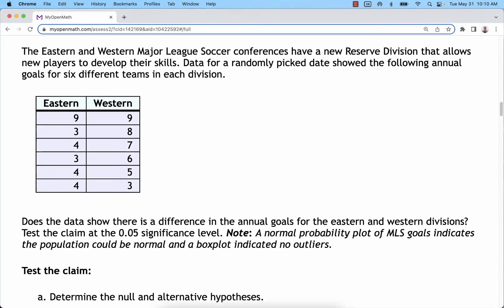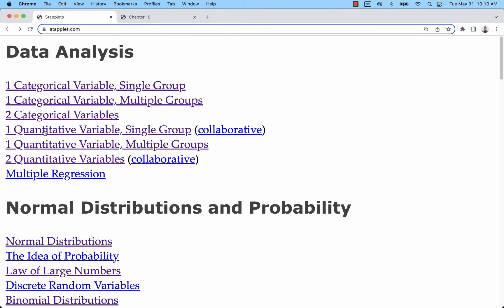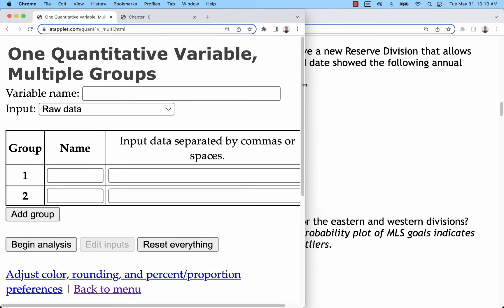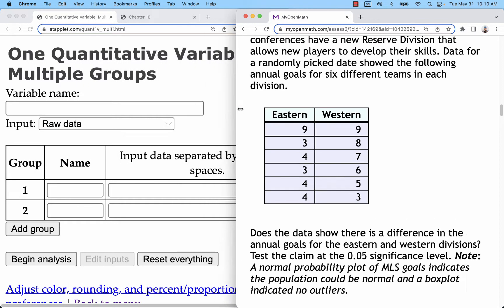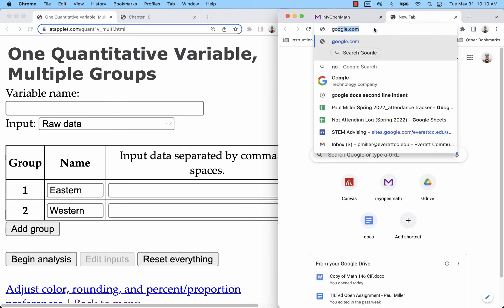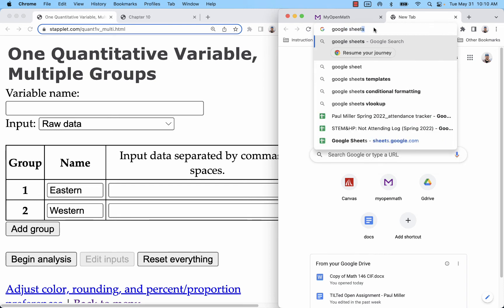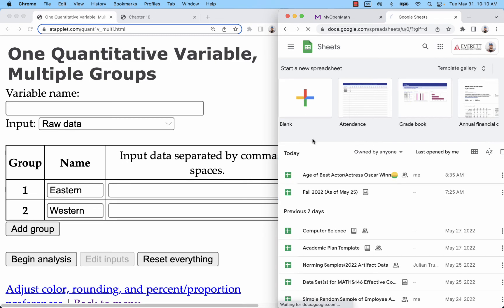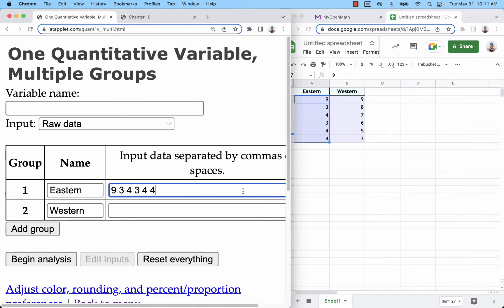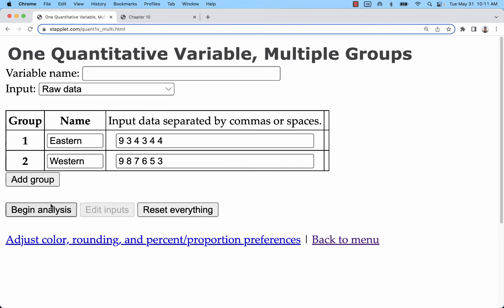So moving on to an example where we have raw data. Back in Statlet, just go back to that main page. We still have one quantitative variable multiple groups, but now we go with that default where we have raw data to compare. And for these problems, you cannot just copy and paste that whole spreadsheet because we need to enter these separately. So we have our eastern and western. What you could do is copy and paste that into a blank Google Sheets spreadsheet. Sheets.google.com, blank spreadsheet. So I'm going to copy that, control C, over here, control V. So now you can copy and paste them separately, or just type them in. These are pretty small samples. So that will be fine. I do not need a third group there. All right, so I'm going to begin my analysis.